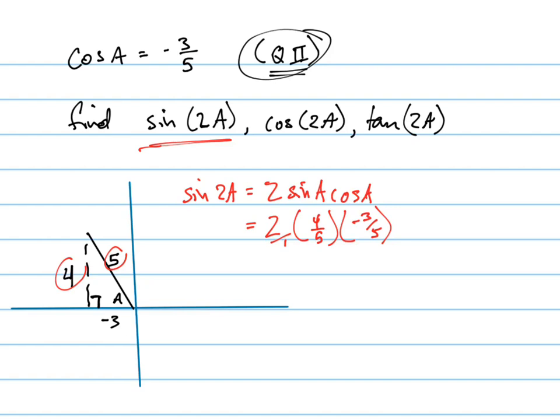And remember, this is the opposite over hypotenuse. So the sine of a equals 4 fifths, because it's the opposite over the hypotenuse. Cosine of a is negative 3 fifths, and tangent of a is opposite over adjacent, so it's negative 4 thirds.